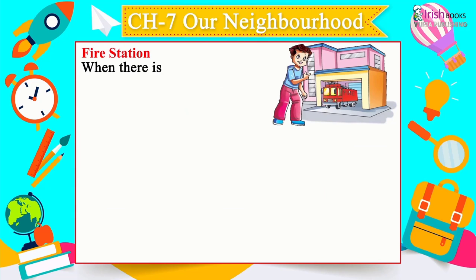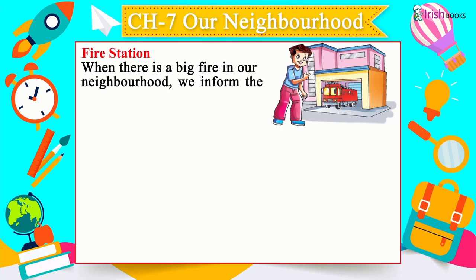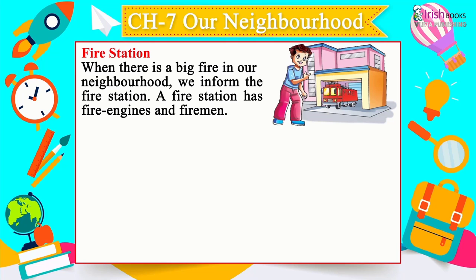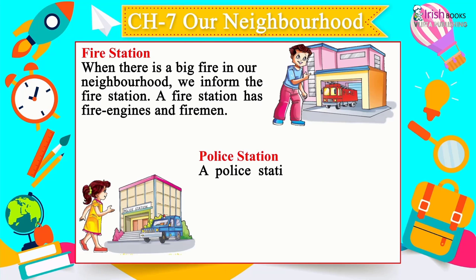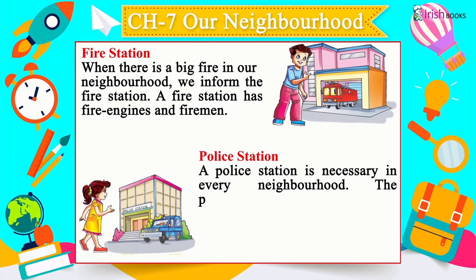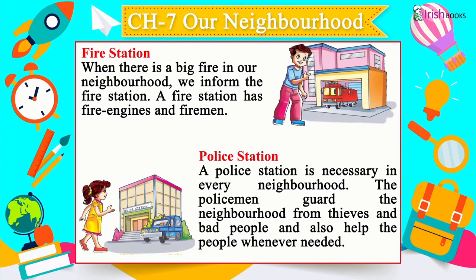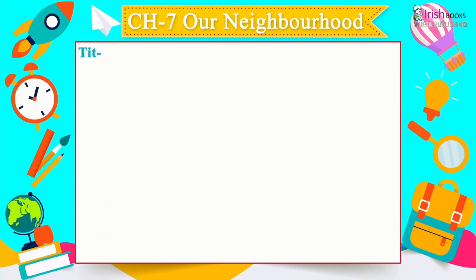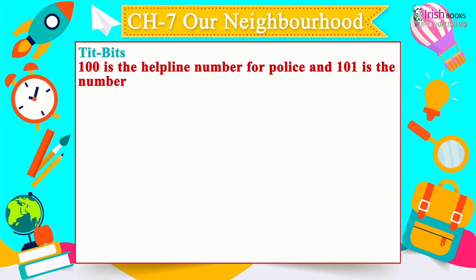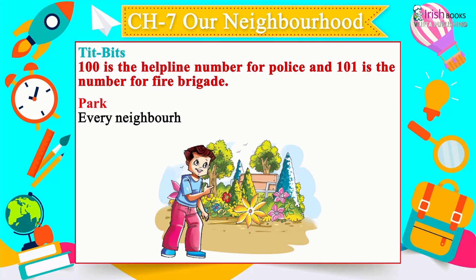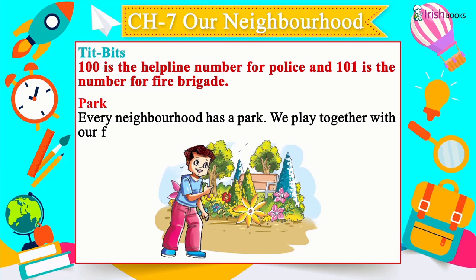Fire Station — when there is a big fire, we inform the fire station, which has fire engines and firemen. Police Station — a police station is necessary in every neighbourhood; policemen guard the neighbourhood from thieves and bad people and help whenever needed. The helpline for police is 100 and for fire brigade is 101. Every neighbourhood also has a park where we play with friends in the evening.